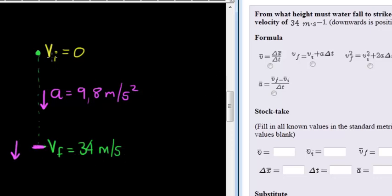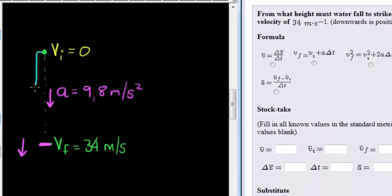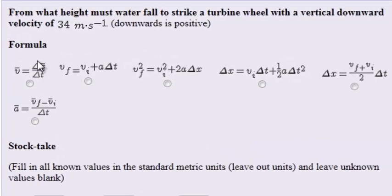Since we've done all of the stock taking already just in this picture, what value are we looking for? Well, they tell us from what height. In other words, the value that we do want to consider is the change in displacement. From what height must it fall? So we must look for a formula that has change in displacement, initial velocity, acceleration and final velocity.